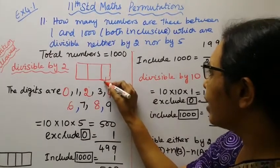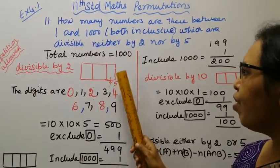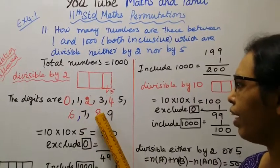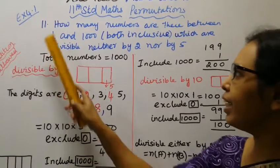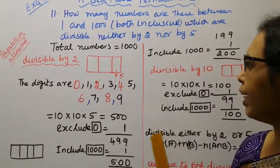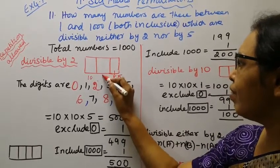2, 3, 4, 5. The third place is 5 ways. Zero, 2, 4, 6, 8. Repetition allowed. In the first place, 10 ways. Second place, 10 ways.